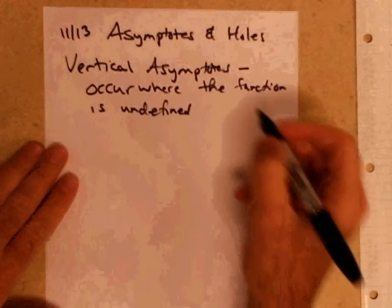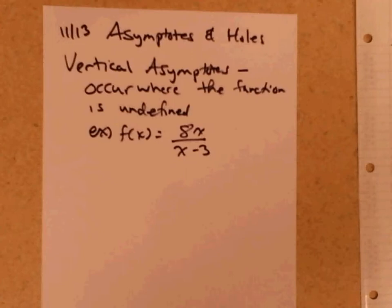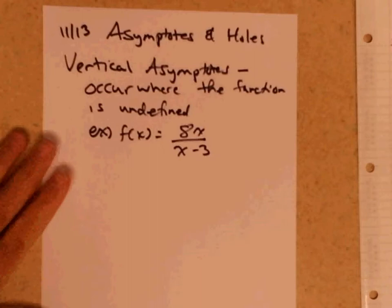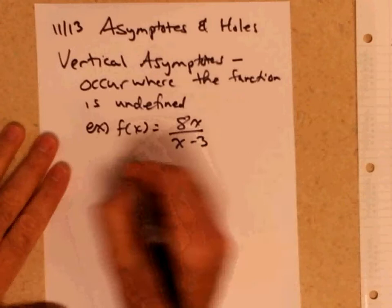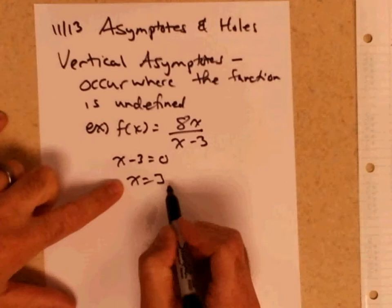As an example, f(x) is equal to 8x over x minus 3. Where is this function undefined? It's the same as the domain. If you take the denominator and this one's straightforward, but let's just pretend the denominator is not straightforward — you take x minus 3, set it equal to 0, solve for x, x equals 3. So that means I have a vertical asymptote at x equals 3.